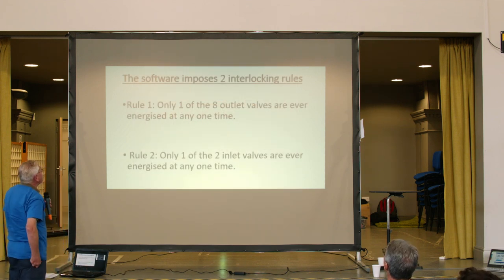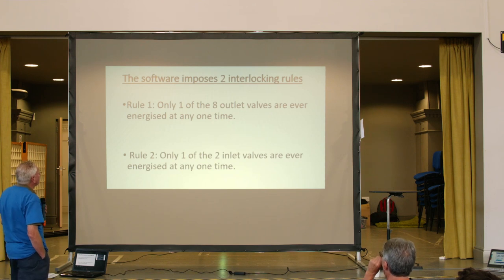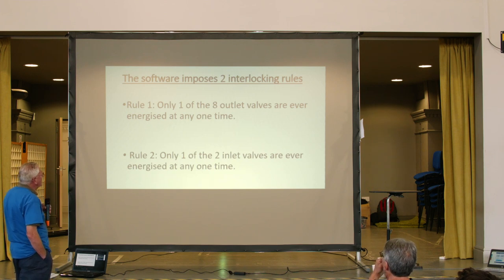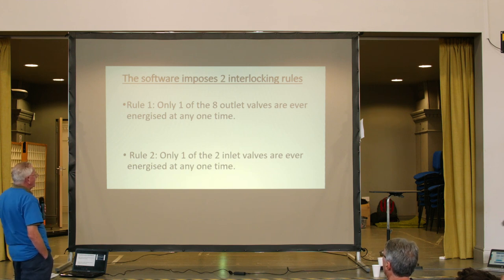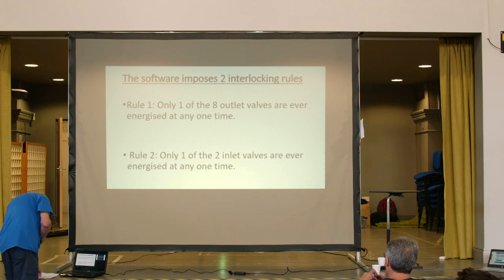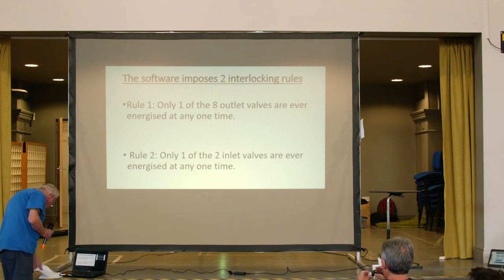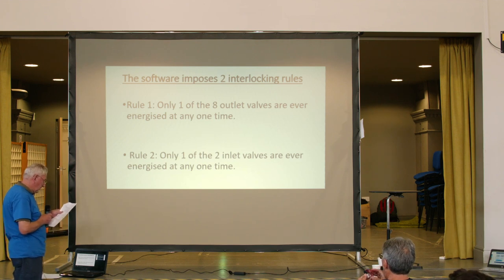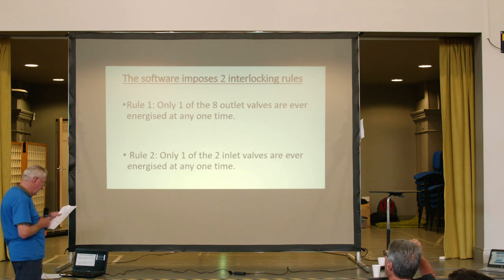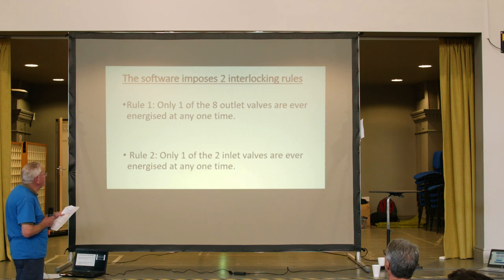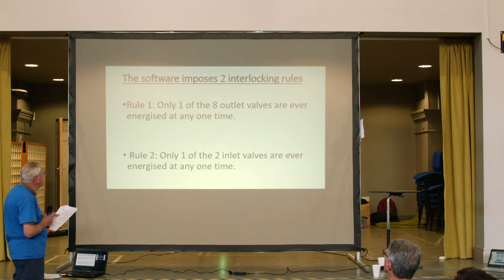The software imposes two interlocking rules on those water valves. Rule one ensures that only one of the eight outlet valves is ever energised at any time. Rule two ensures that only one of the two inlet valves is ever energised at one time. Rule one ensures I don't overload the water supply sources so I always have good pressure for irrigating the beds. Rule two prevents any risk of backfeeding from the rainwater supply to the mains water supply. And the rules together prevent the DC power supply that feeds them being overloaded.